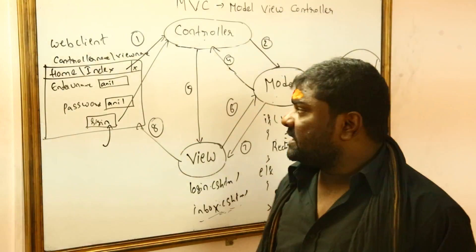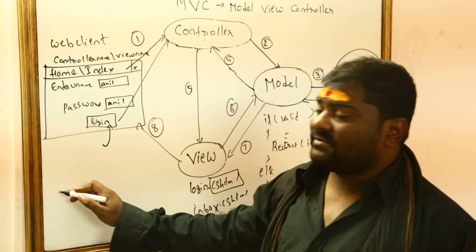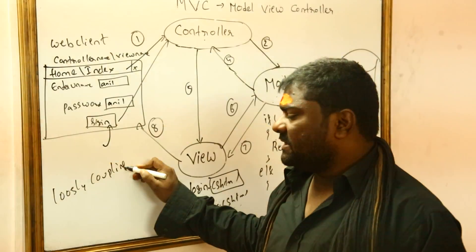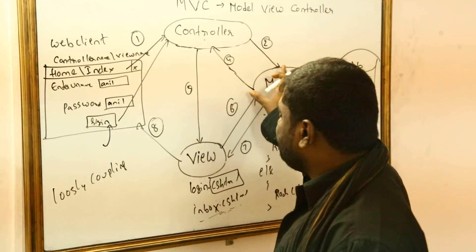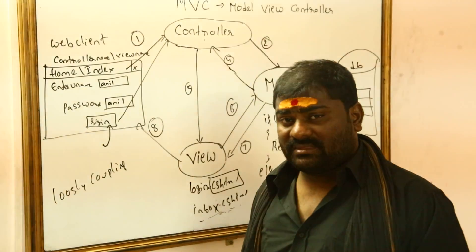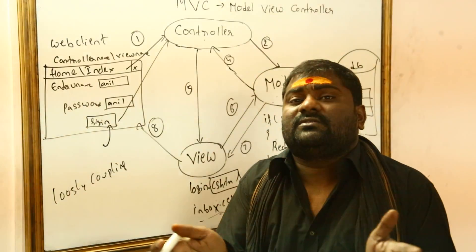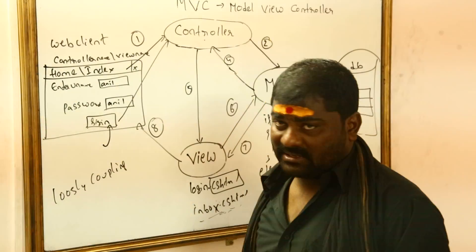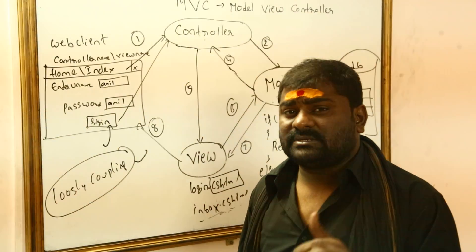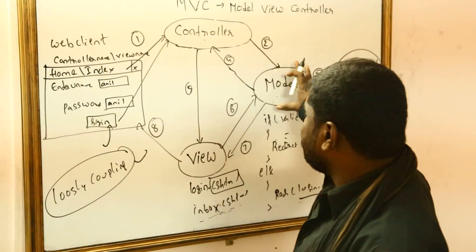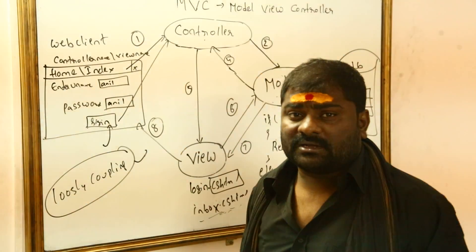MVC is very simple. There are no ASPX pages — they are replaced with CSHTML. The main advantage of MVC is loosely coupling. Loosely coupling means there are no dependencies: the model is not dependent on the view, and the view is not dependent on the model. If you change the model, you don't need to change the view. The degree of dependency is decreased — that is loosely coupling. You can also add extra database code inside the model without disturbing the view, and you can send individual parts for unit testing.